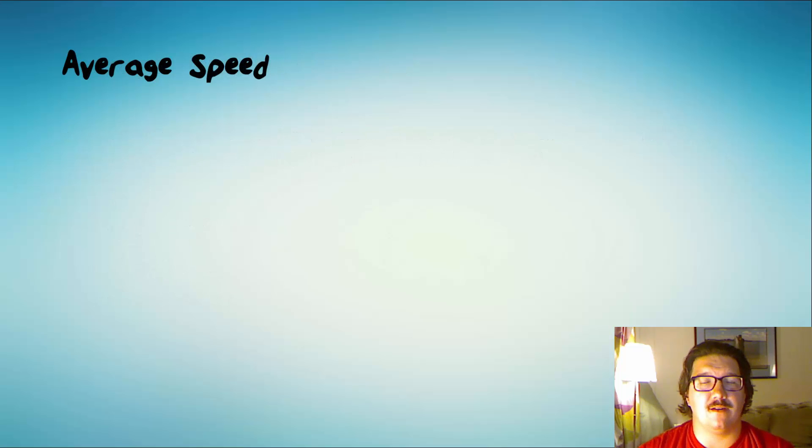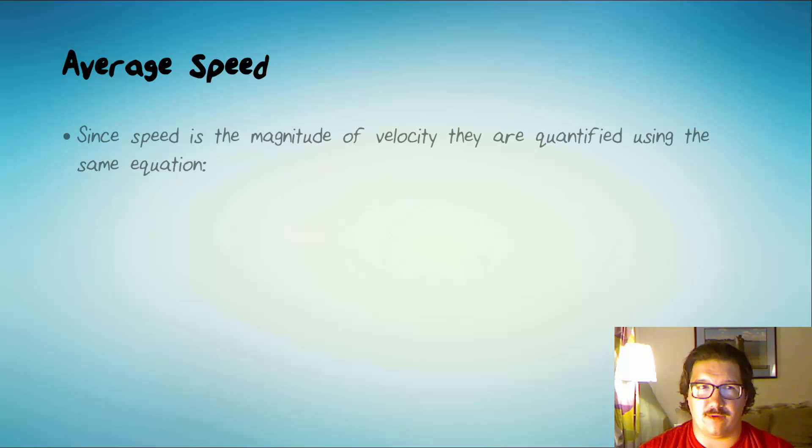Let's address average speed briefly. We've seen that speed and velocity are very closely related. And since speed is just the magnitude of the velocity, they're quantified using the same equation. However, if we're talking about average speed rather than average velocity, then V-bar stands for average speed, D stands for distance, not displacement, and T still stands for time.